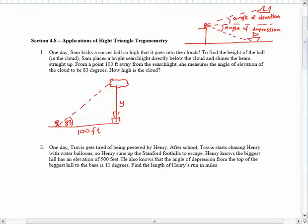And so then we can just set up an equation for tangent of 83 equals y over 100. And we can multiply both sides by 100 to isolate the y, so that y will end up equaling 100 times the tangent of 83.